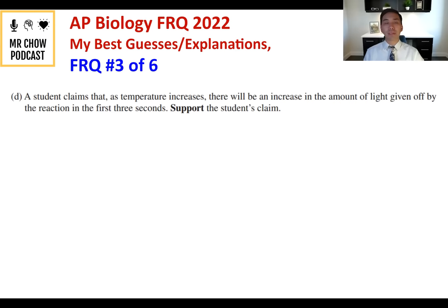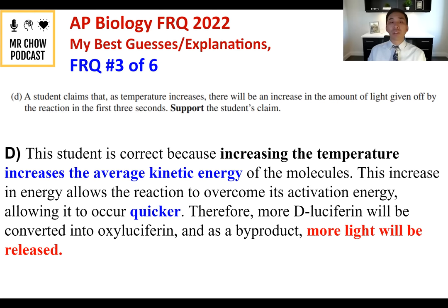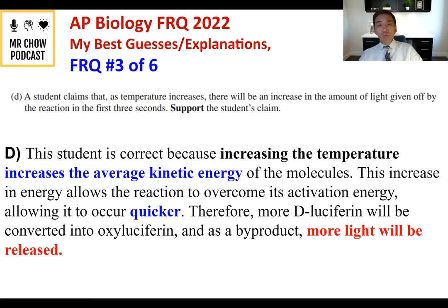Question 3D: A student claims that as temperature increases, there will be an increase in light given off. This student is correct because increasing temperature increases kinetic energy — the movement of molecules. This increased energy allows the reaction to overcome its activation energy, occurring quicker. Therefore, more D-luciferin is converted into oxyluciferin, and as a byproduct, more light is released.